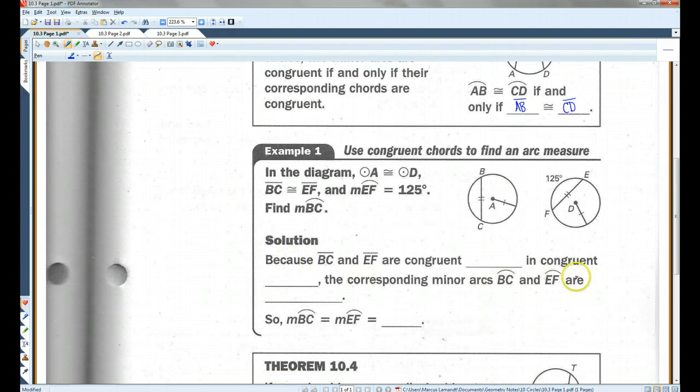For example, in the diagram, these two circles are congruent. Also, the chords BC and EF are congruent and the measure of arc EF is 125 degrees. Find the measure of arc BC. So this equals this. This is 125 degrees. Hopefully, you guys can see that this also has to be 125 degrees.